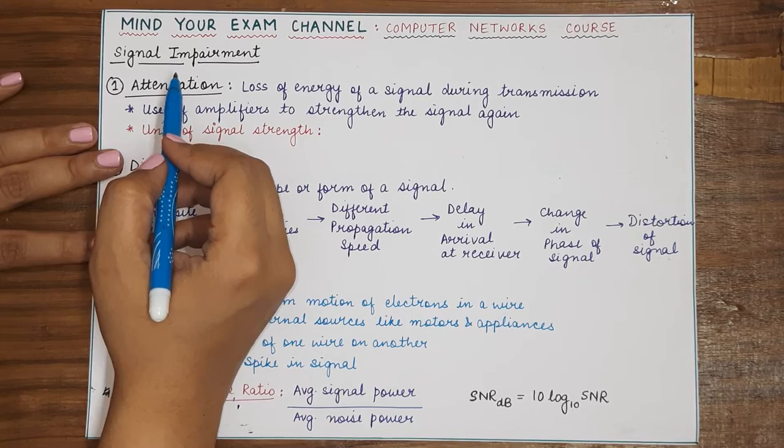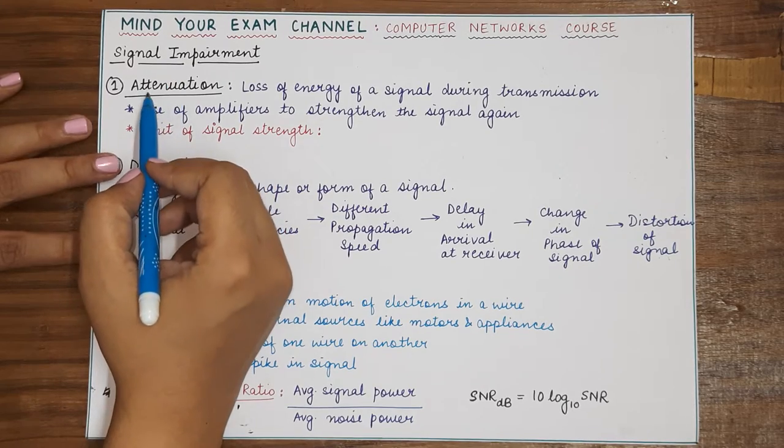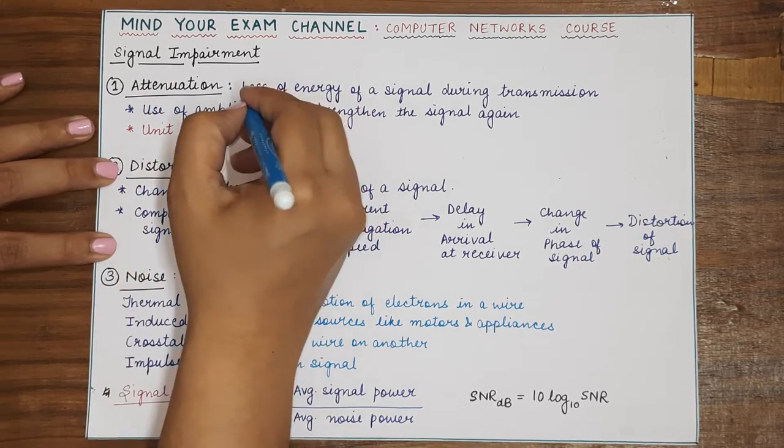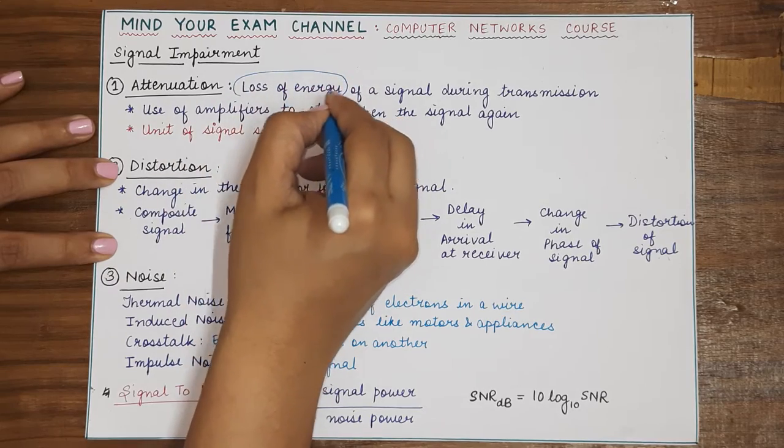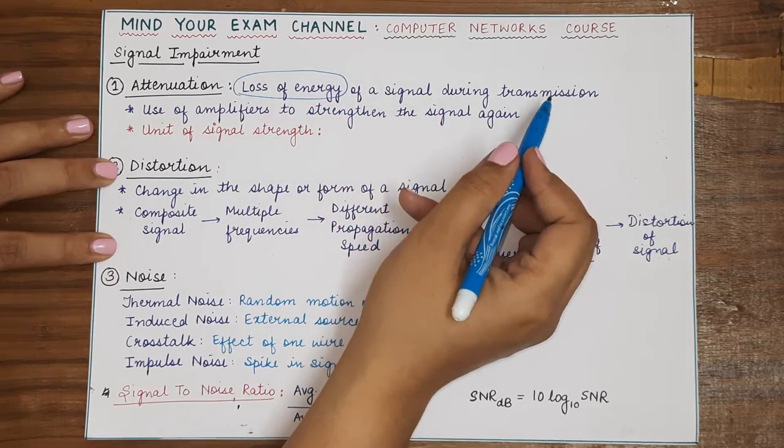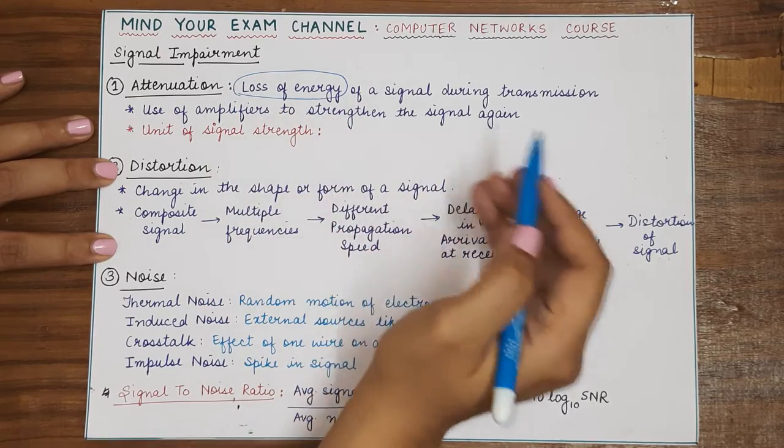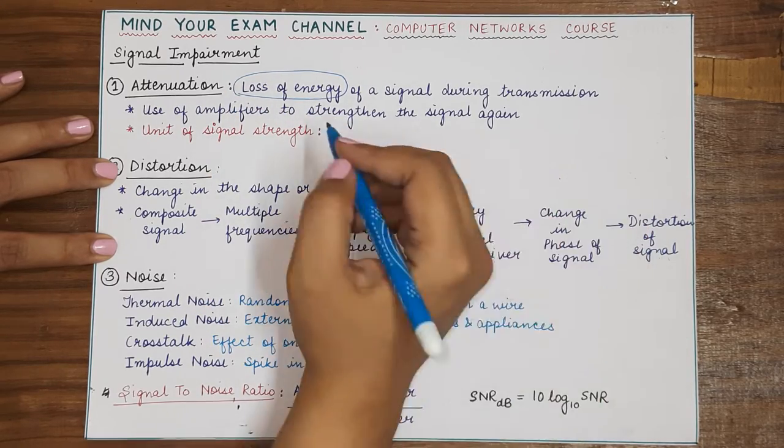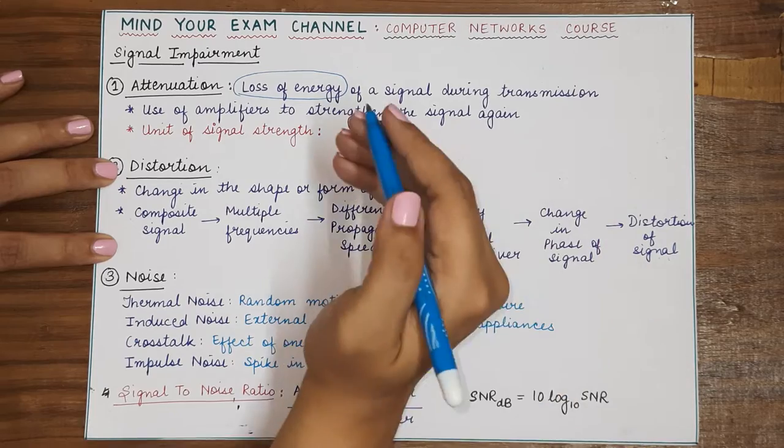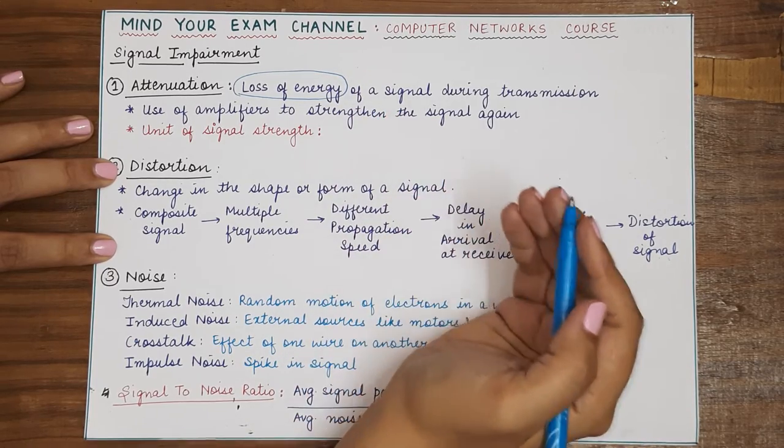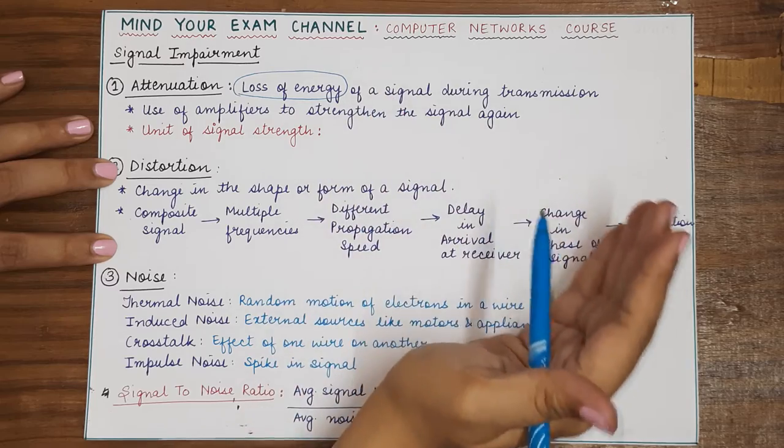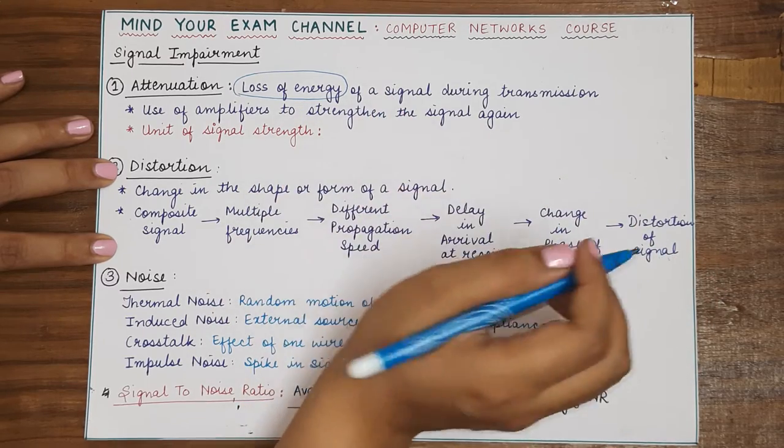So first kind of signal impairment is attenuation. Attenuation basically refers to the loss of energy of the signal during transmission. So basically, when signal travels through long wires and it covers large distances, it loses some of its energy in the form of heat because it overcomes the resistance of the medium that it is crossing.